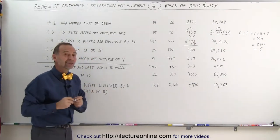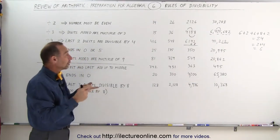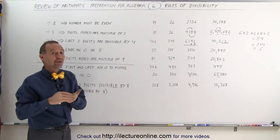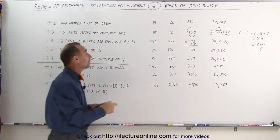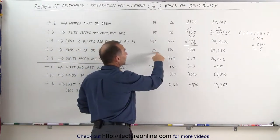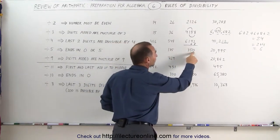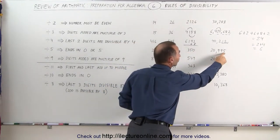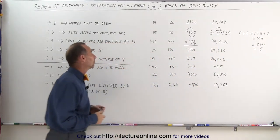How about 5? 5 is always really easy. All we have to look for is whether the number ends in a 5 or a 0 — if so, the whole number can be divided by 5, no matter how big the number is.